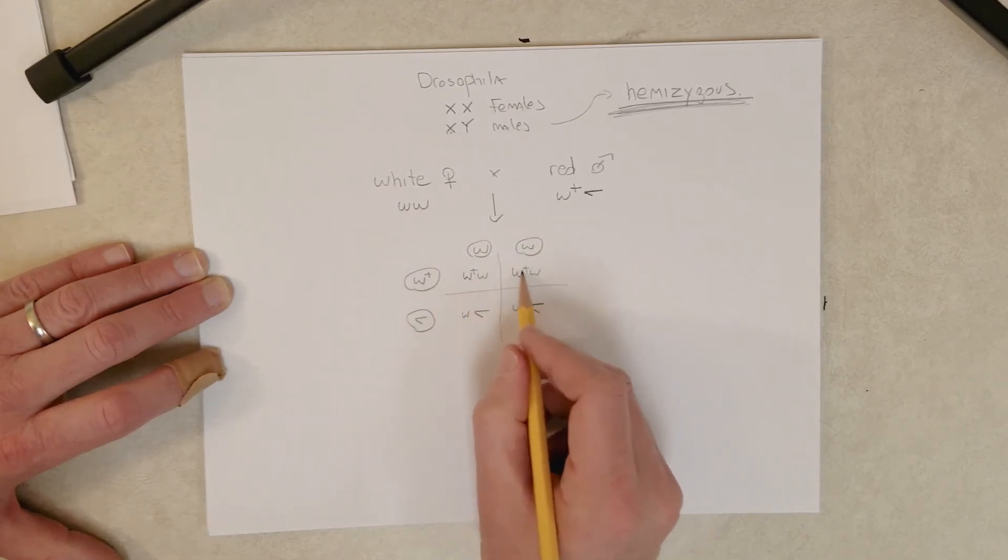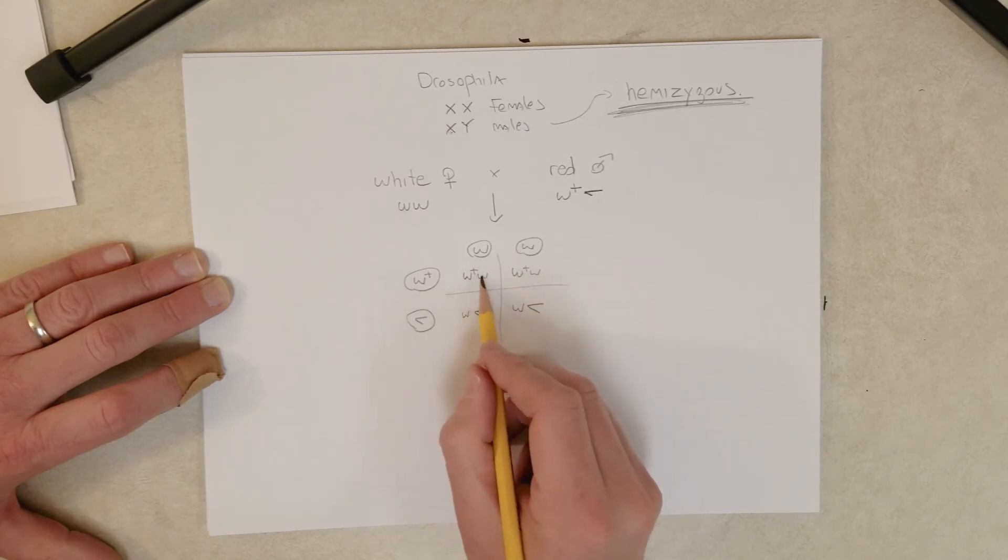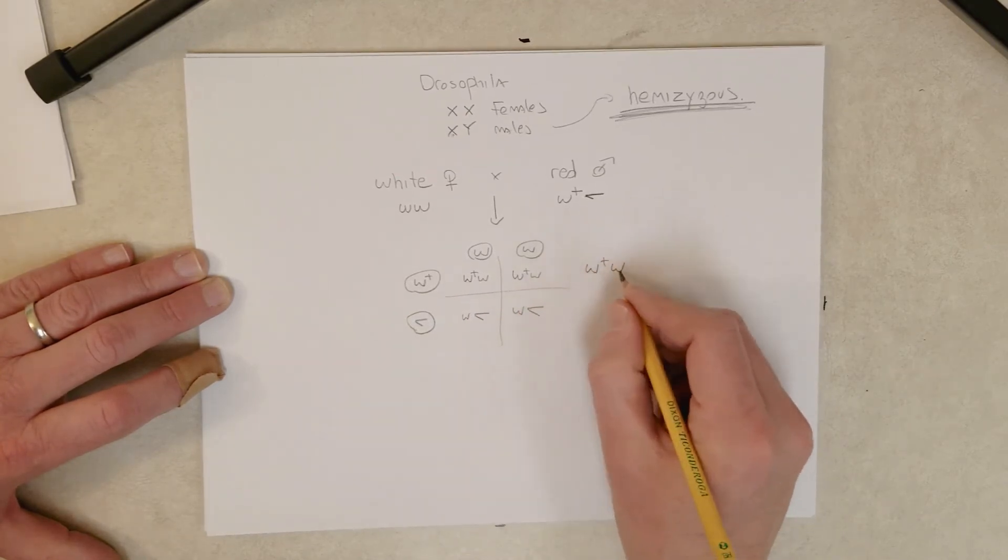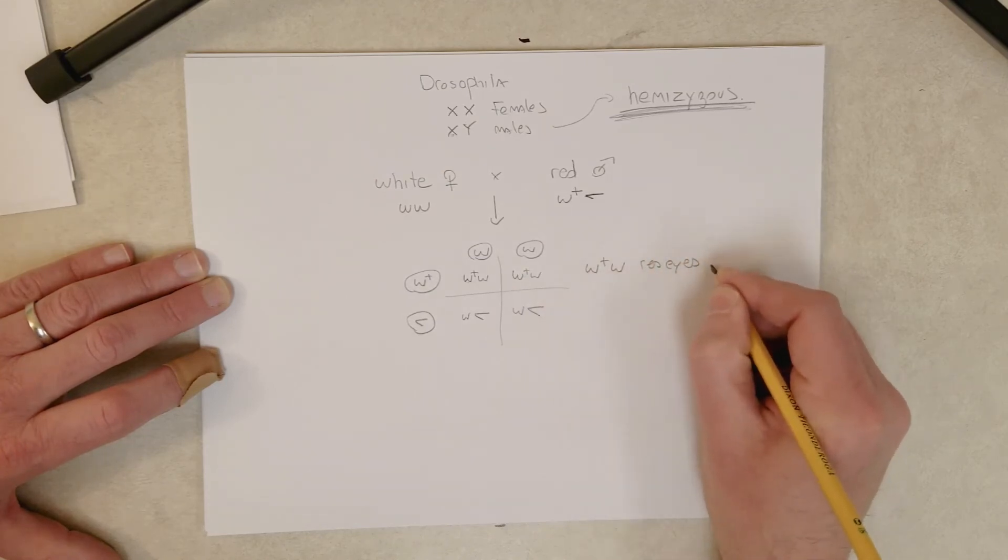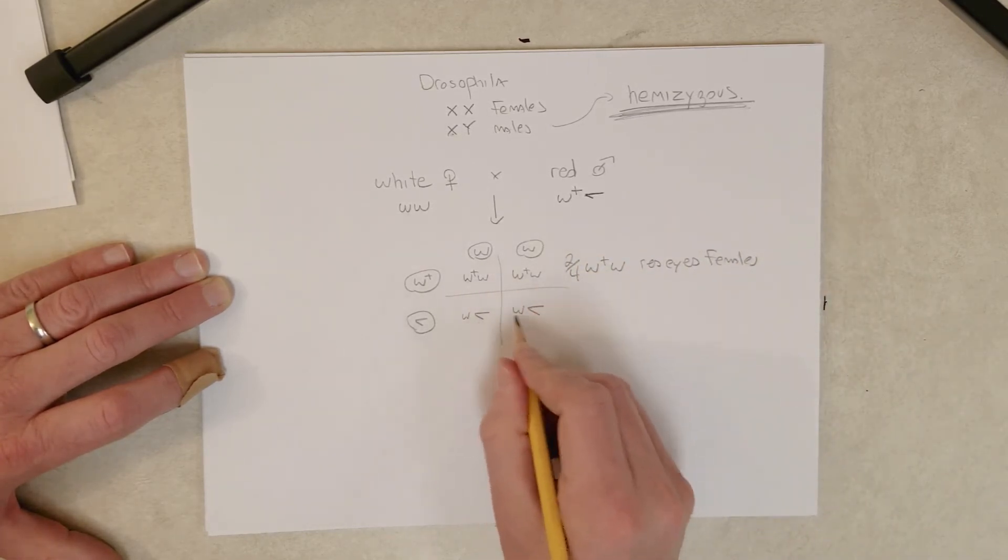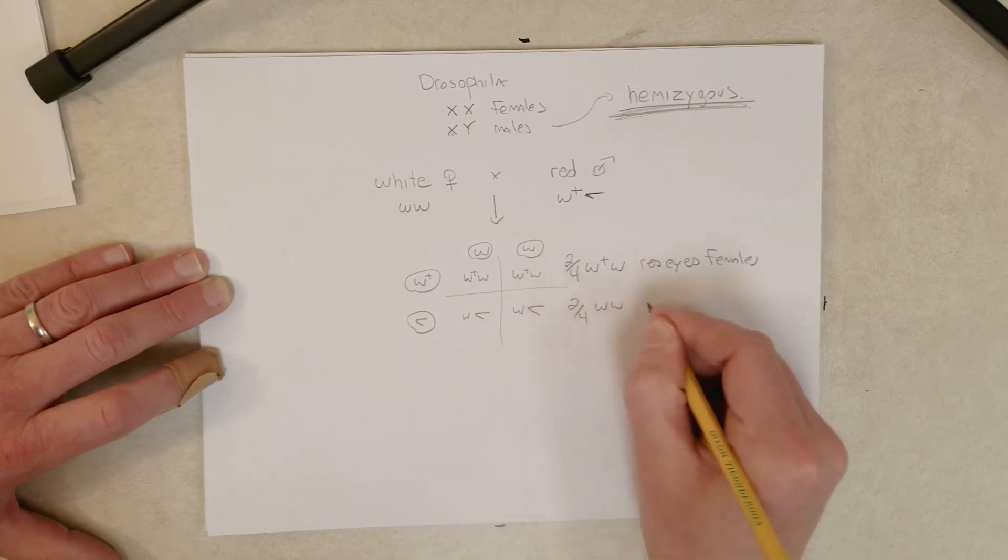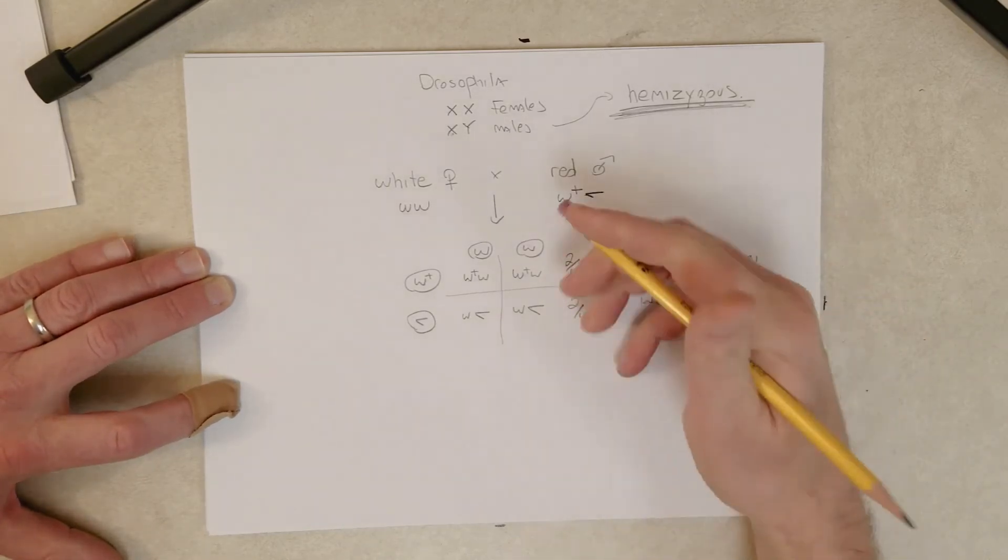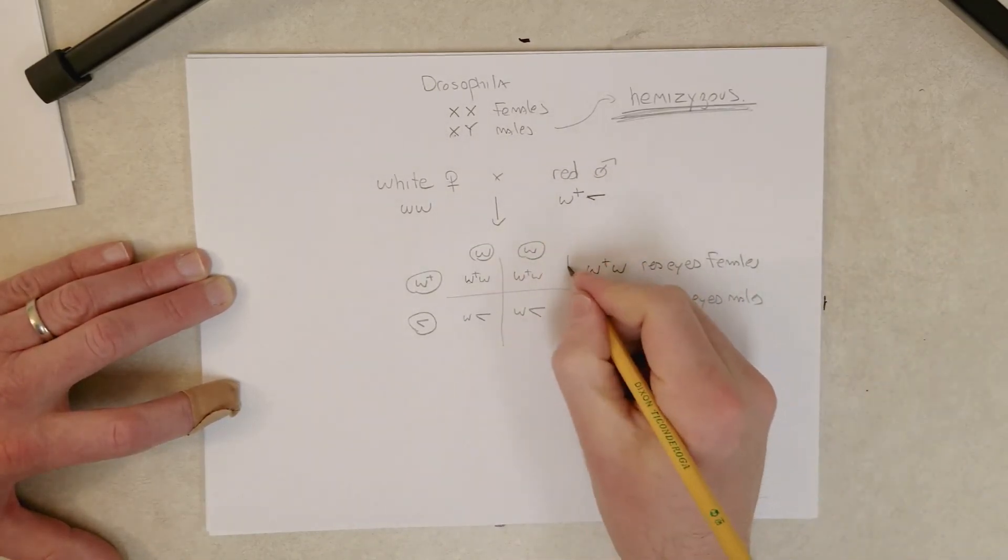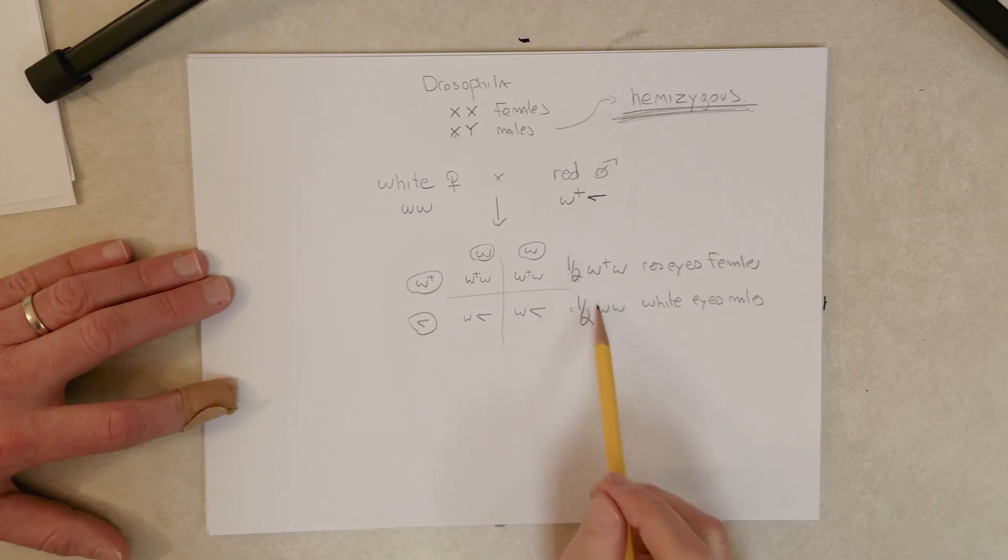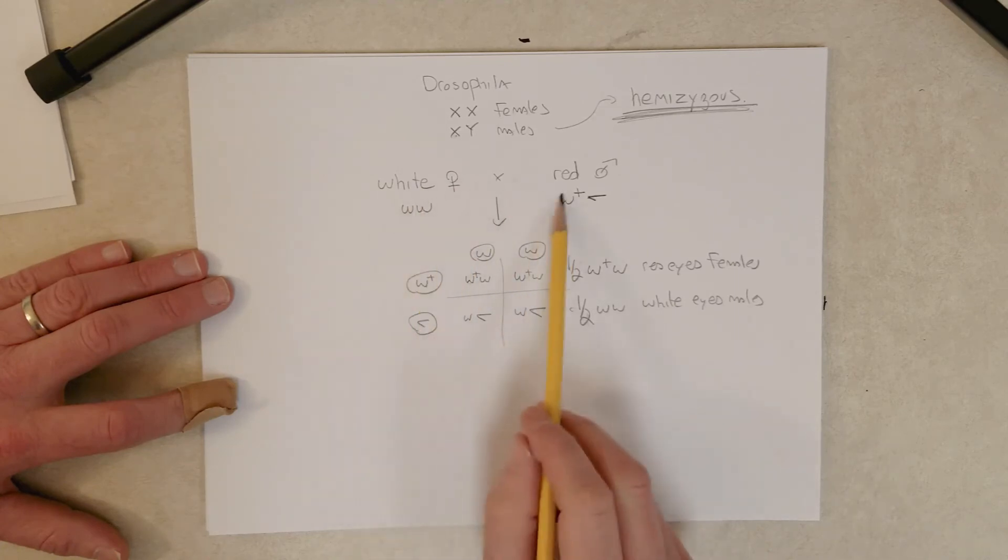So these flies right here, the genotypes are identical. They're female, right? Because we have two copies of W, which means we have two X chromosomes. But the genotypes are such that they will be red-eyed. So red-eyed females. And this is going to be two quarter, one quarter, two quarter. And these genotypes are the same. So we have two quarter white-eyed males. We can reduce this: one half red-eyed females, one half white-eyed males.